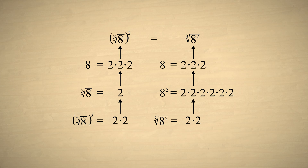It is now easier to see why both operations produce the same result. On the left side, we first eliminate all but one-third of the factors, and then multiply the number of factors by two. While on the right side, we first multiply the number of factors by two, and then take one-third of the factors. Since it doesn't matter in which order we multiply the number of factors by one-third and two, either way we will end up with the same number of factors, and we'll get the same result.